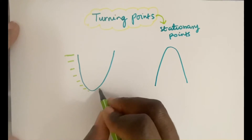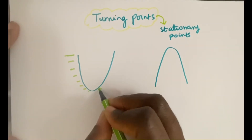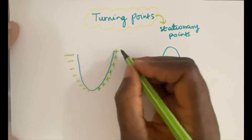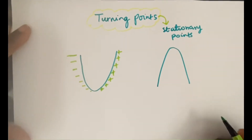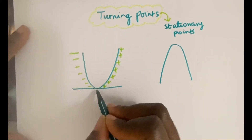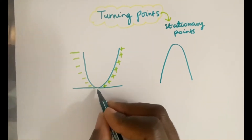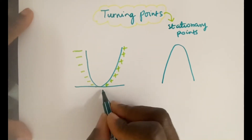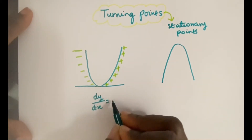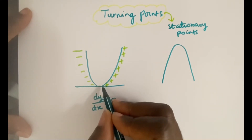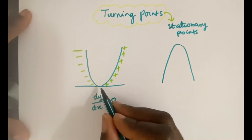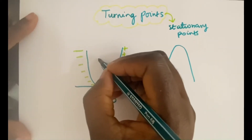The gradient keeps getting smaller until it gets to this point where there's no gradient anymore — it vanishes and becomes zero. On the other side you have a positive gradient that starts getting bigger and bigger. If I were to draw a tangent at this lowest point, the dy/dx is equal to zero. The gradient at that point is equal to zero, and that's called a stationary point, because dy/dx equals zero — nothing is happening at that point.